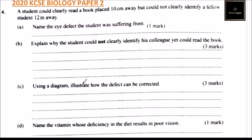Question number four. We are told a student could clearly read a book placed 10 cm away, but could not clearly identify a fellow student 12 meters away. Part A of the question: name the eye defect the student was suffering from. So we can say this is short-sightedness.